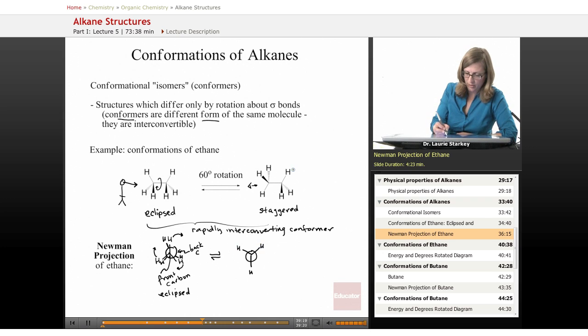On the back carbon, we see a hydrogen pointing straight up, and then the other hydrogens are down and to the right and left. And so here we see the staggered conformation, a little easier to see in this Newman projection.